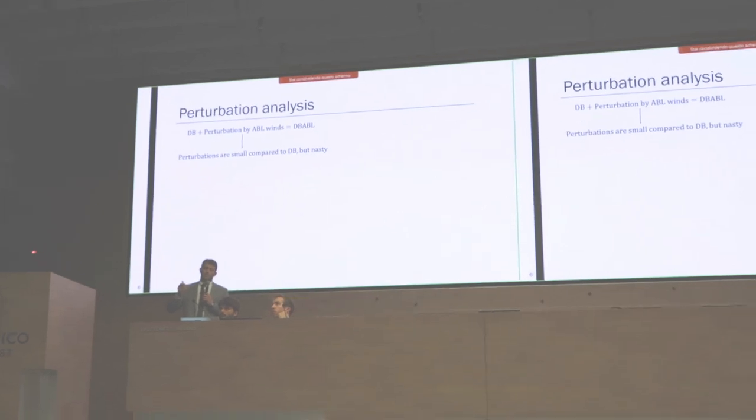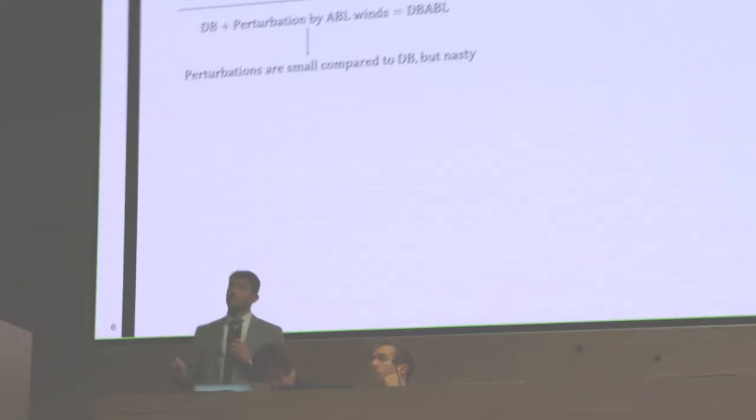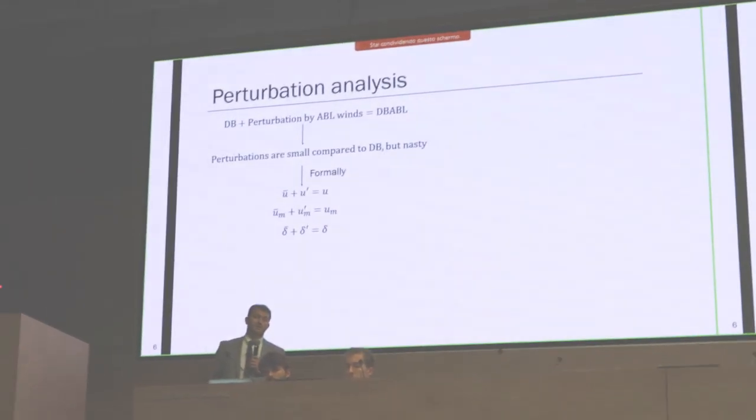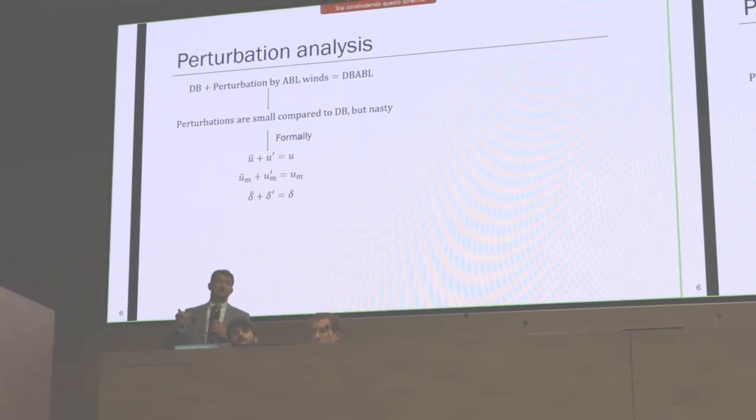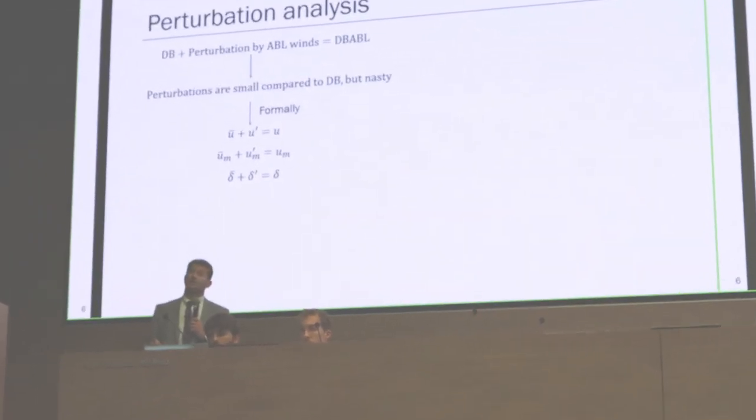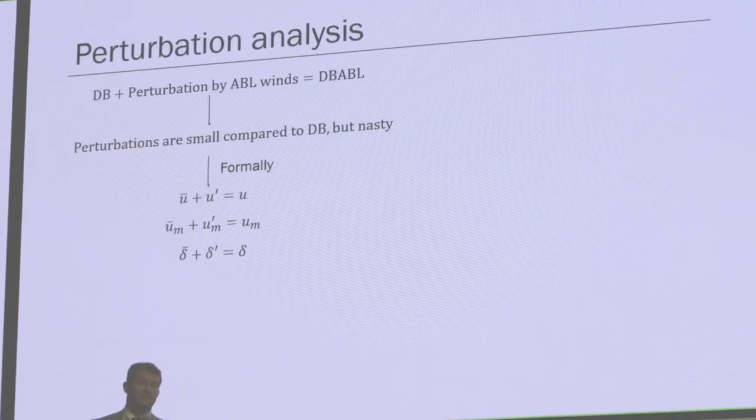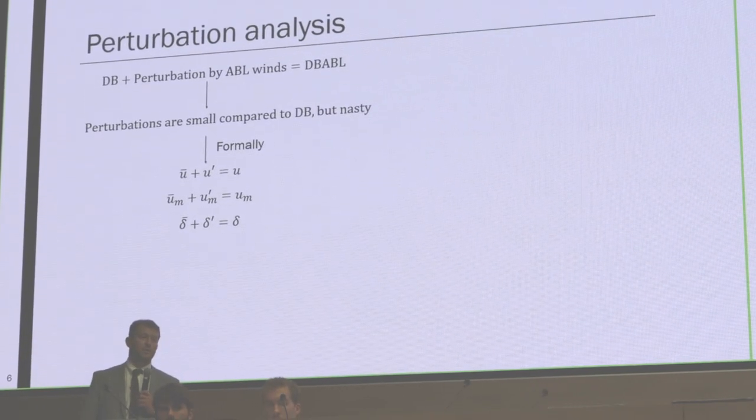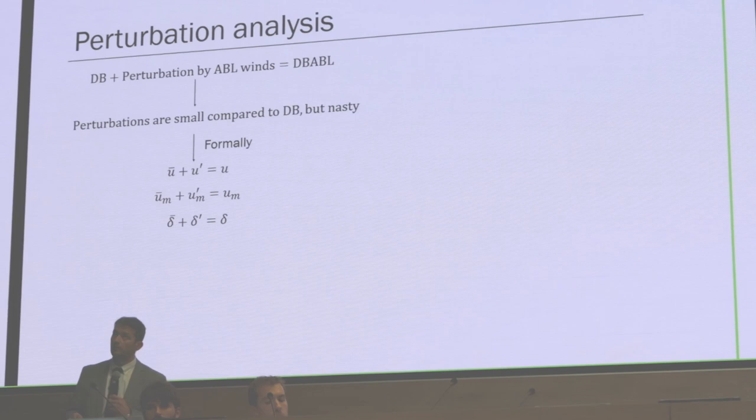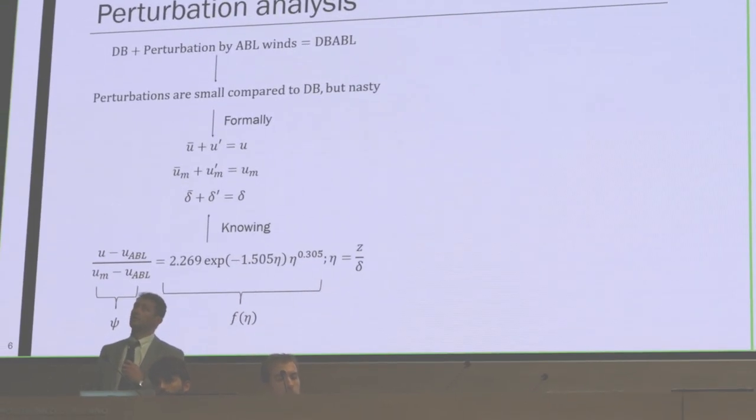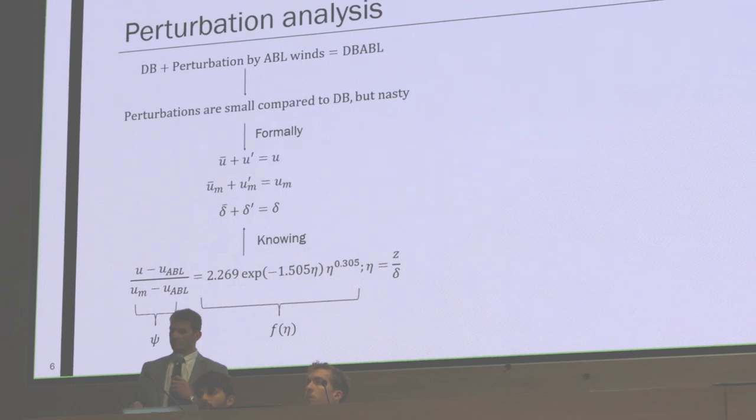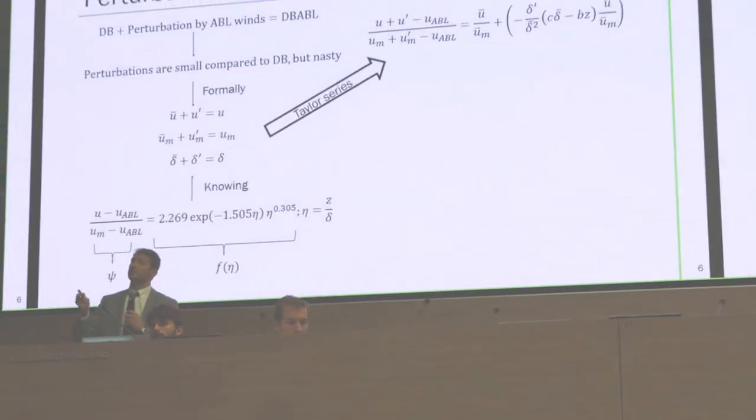In a formal way, perturbations need to be small, just like in Reynolds decomposition, and we also want to use Taylor series expansion, so we impose that ABL winds have to be weak. We have three quantities: velocity with over bar is the base state, that's downburst. Prime is perturbation, and the right-hand side is resulting outflow. Delta is the height where velocity drops 50% compared to the maximum velocity in the outflow. The perturbation quantities are plugged in this function, we use Taylor series expansion, and get this result where C and B are some constants.